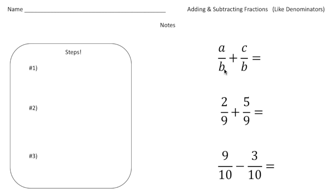Instead of having numbers, I have letters to represent the numbers. So it's a over b plus c over b. Notice our denominators are the same as the b values.